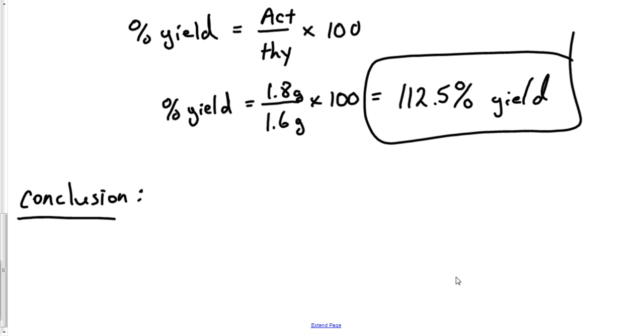I want, that's an eraser. I want an actual, I want your theoretical, and I want, in this case, mine was 112. I want your percent. Those are the things that should be in your conclusion. Tell me what you got. Tell me what you should have got. And then tell me your percent yield.